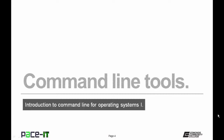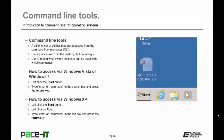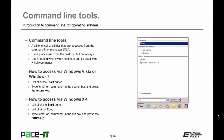Command line tools are a utility or set of utilities accessed from the command line interpreter, the CLI, usually from the desktop. When you have the command line up, you can use the forward slash question mark to find out what modifiers can be used with a command. To access the command line from Windows Vista or Windows 7, left-click the Start button, then in the run box type 'command' or 'CMD'. On Windows XP, left-click Start, click Run, then type CMD or command.